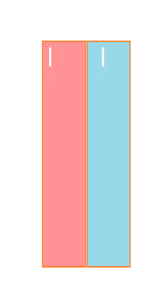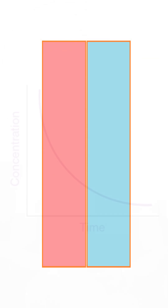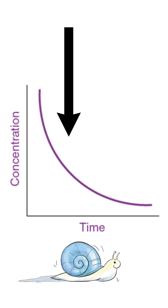So let's briefly see why slowing down the blood flow doesn't help forever. Diffusion follows a simple rule: it is faster when the concentration gradient is high — simple first-order kinetics. In the initial moment of contact with the dialysate, urea rushes out quickly. Then, as the dialysate compartment starts accumulating urea, the gradient weakens and diffusion slows down.